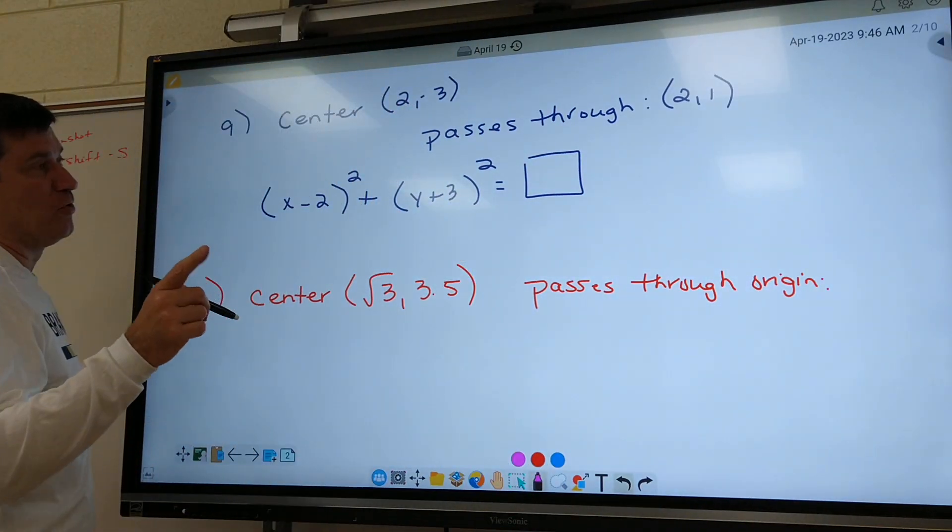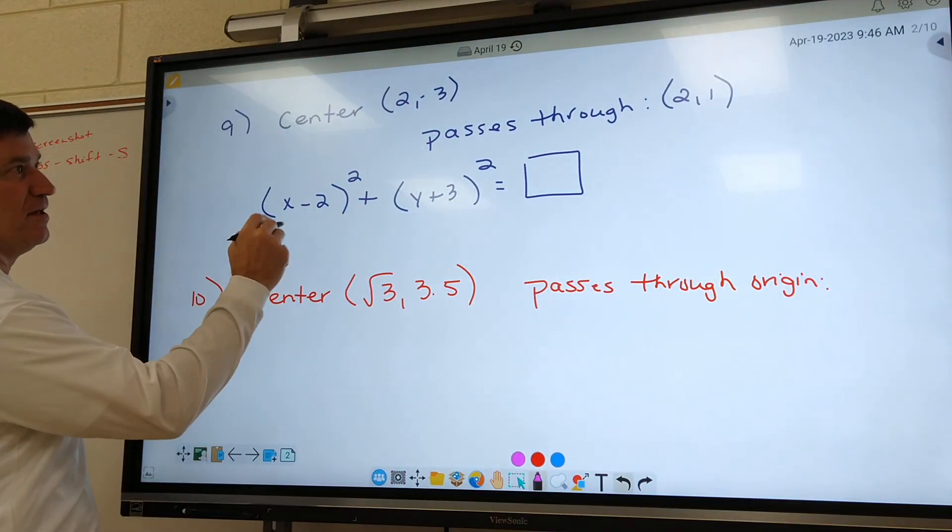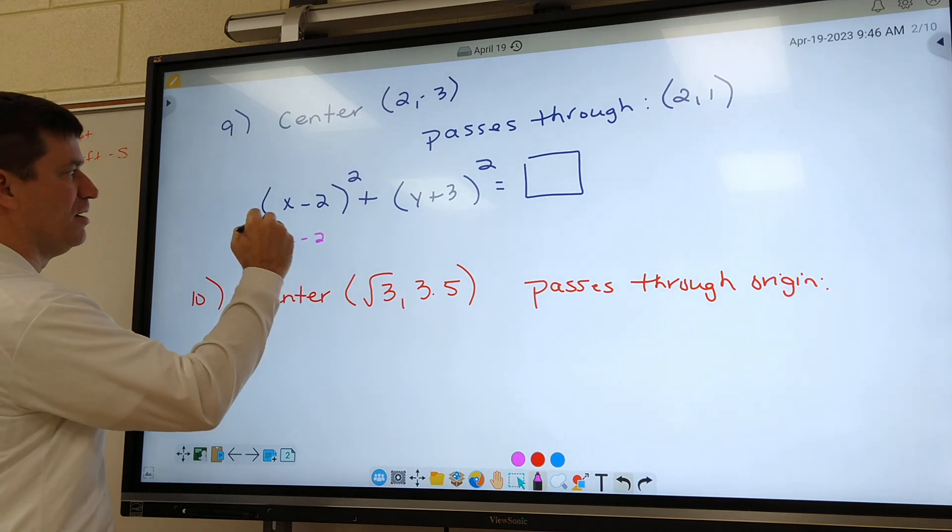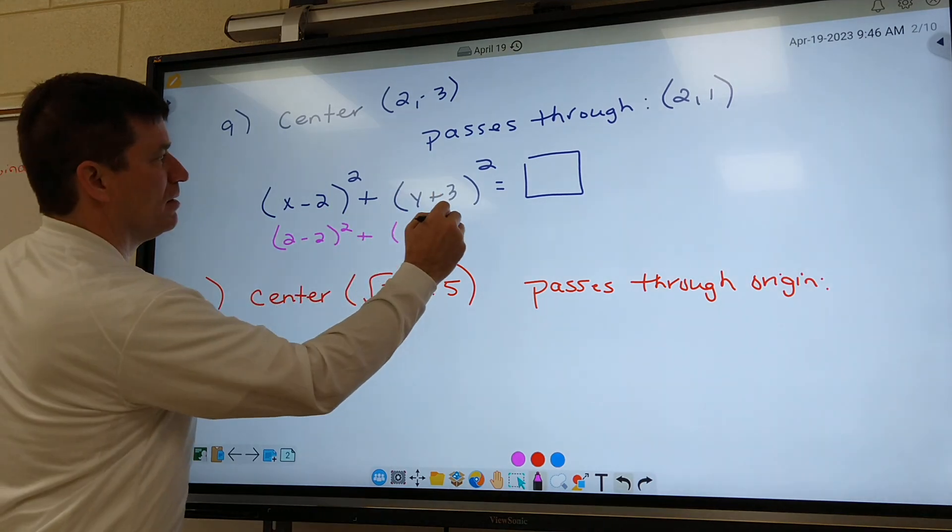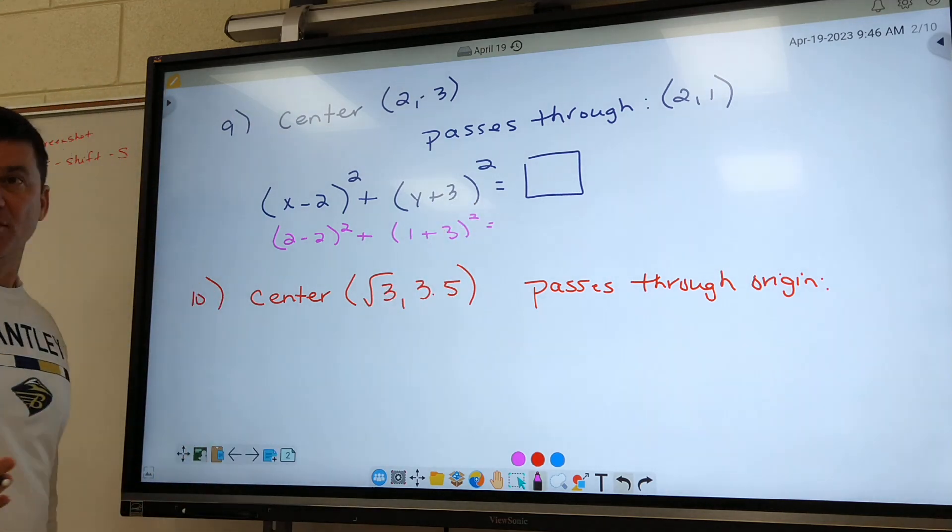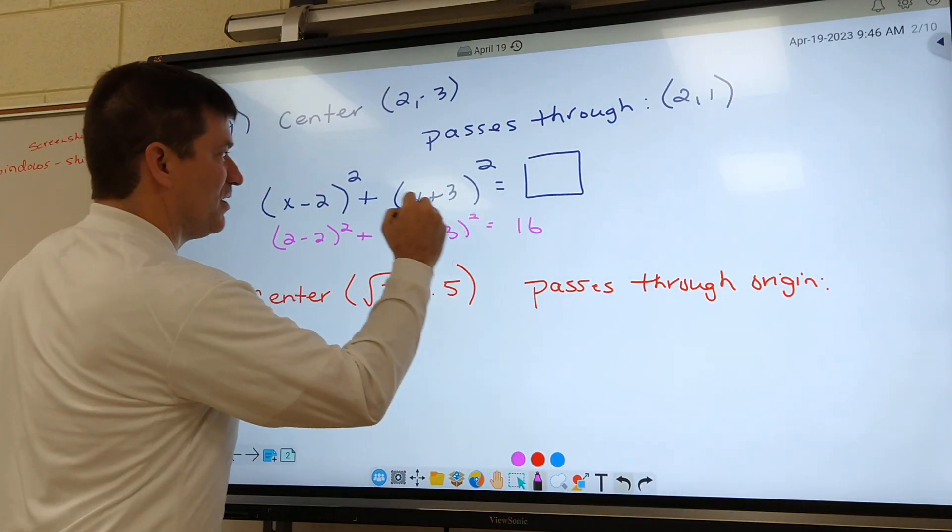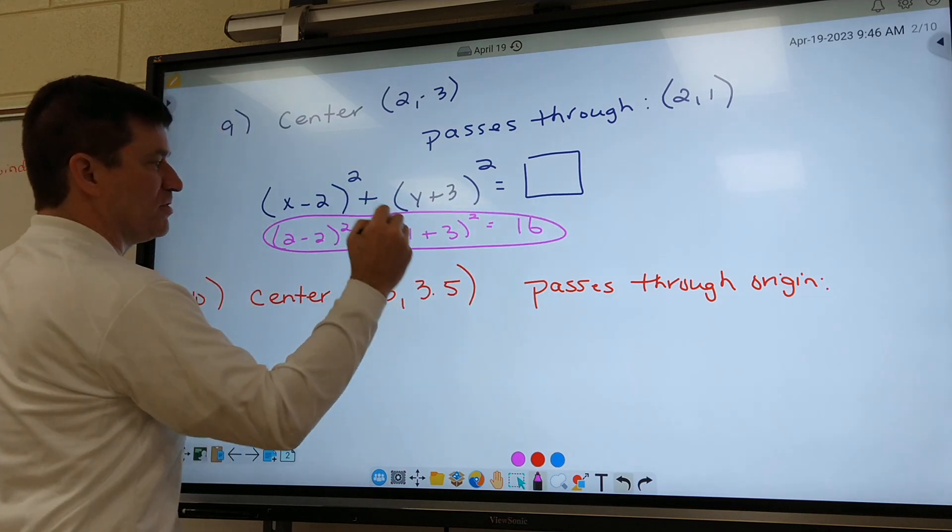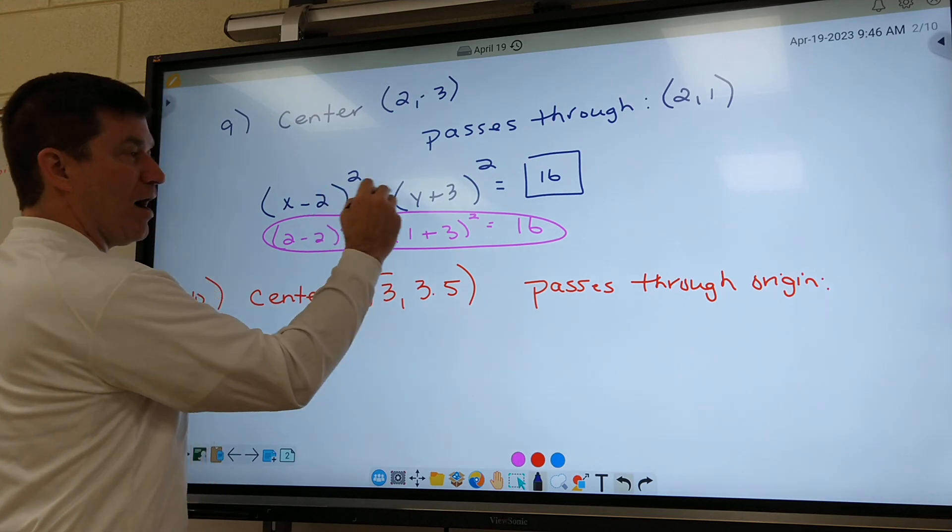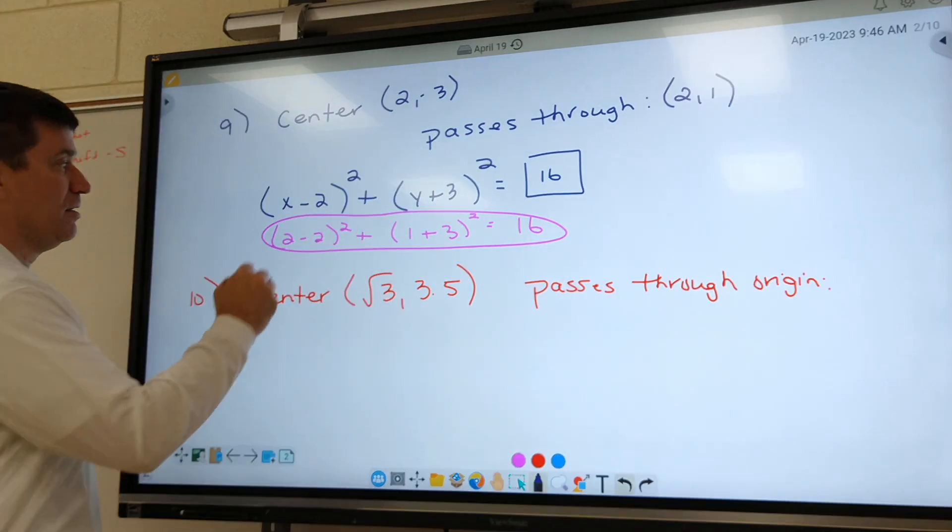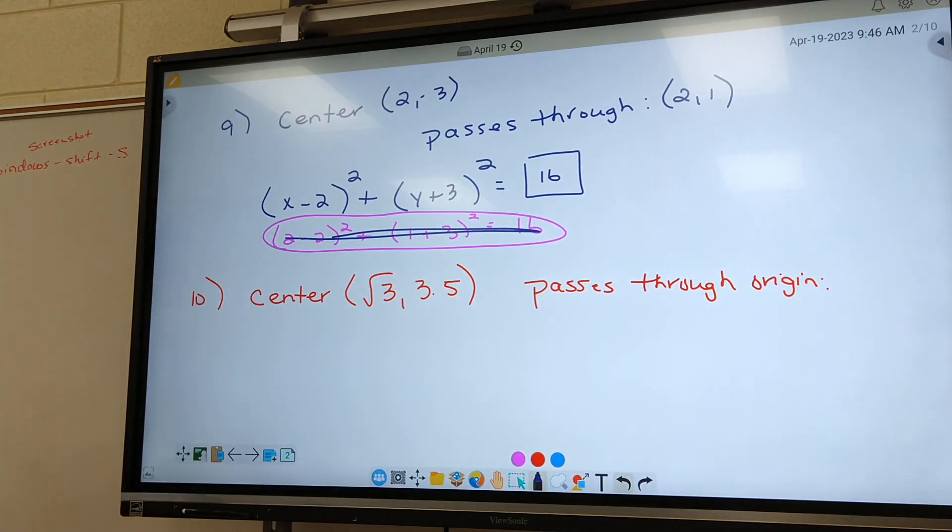Now, a mistake some of you made on your quiz last week - some of you did this. I plug in 2 right here. That's fine. I plug in 1 right here. Type all that in your calculator and you get 16, right? Some of you put 16 there, circled this for your answer. That one's not your answer.